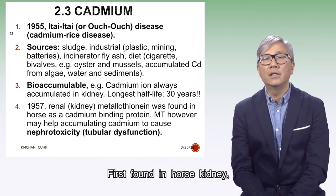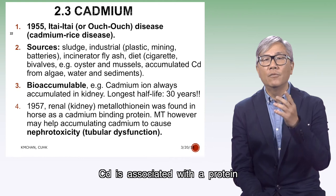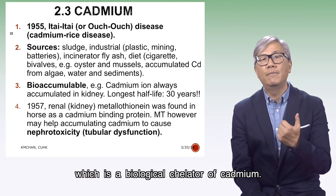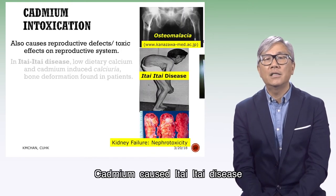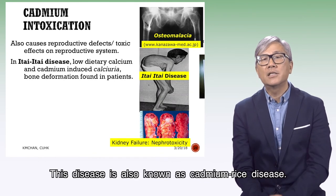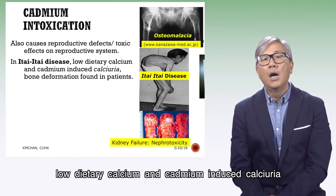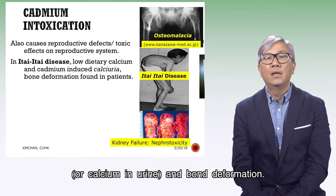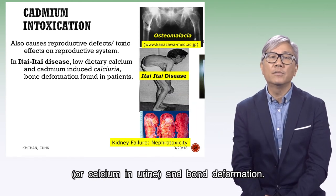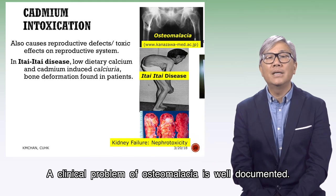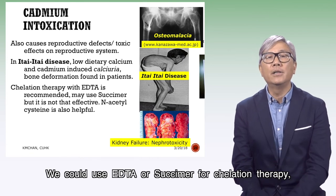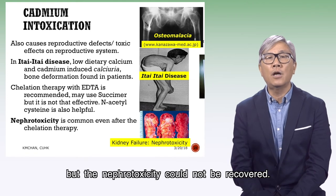First found in horse kidney, cadmium is associated with a protein called metallothionein (MT), which is a biological sequestrator of cadmium. Cadmium causes Itai-itai disease in Japan. In this disease, low dietary calcium and cadmium-induced calciuria (calcium in urine) lead to bone deformation. A clinical problem of osteomalacia is well documented. We could use EDTA or DMSA for chelation therapy, but the nephrotoxicity cannot be recovered.